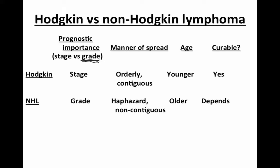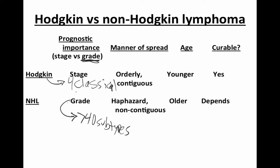There are four classical subtypes of Hodgkin lymphoma, and within each stage the prognosis is identical. Whereas for non-Hodgkin lymphoma, the grade is extremely important — there are over 40 different subtypes, and the prognosis and treatment radically differ based on grade. Stage is also important for non-Hodgkin lymphoma, but not nearly as important as it is for Hodgkin lymphoma.